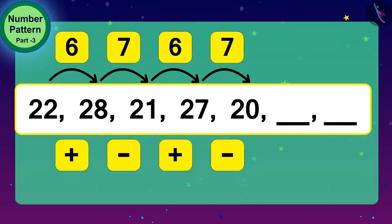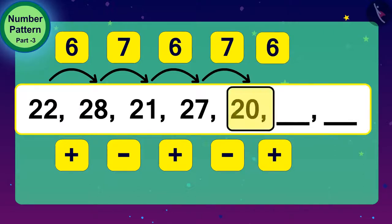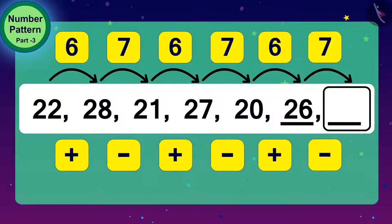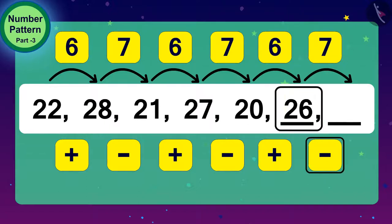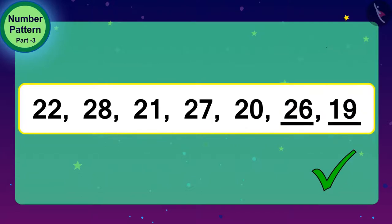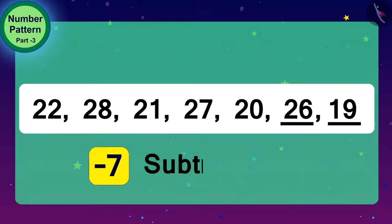So, what do we have to do to fill this blank space now? That's correct! We have to add 6 to 20. What will it be? 26. And now, what do we have to do to fill these other spaces? Yes! We have to subtract 7 out of 26. 7 less than 26? 19. Here, we completed this number pattern perfectly by using the process of addition and subtraction.